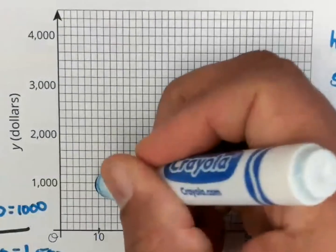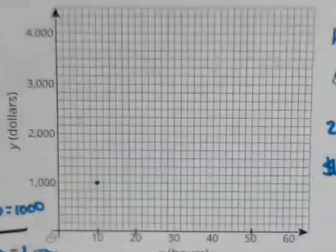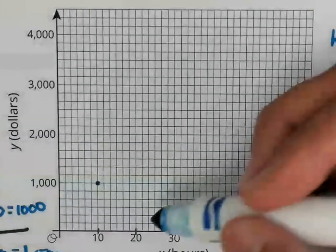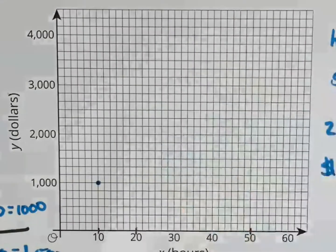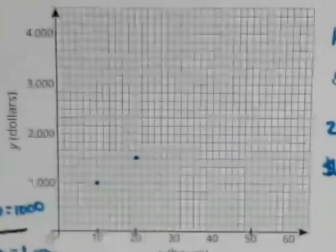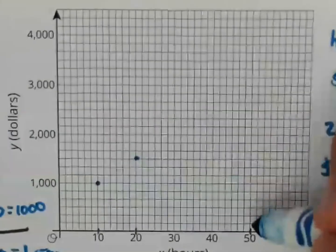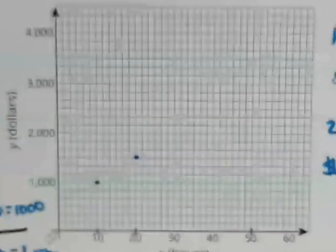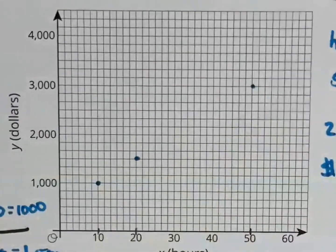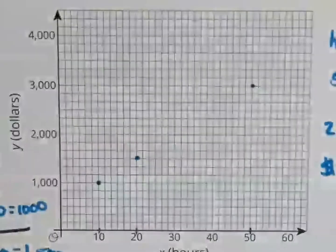So 10, 1,000, I'm going to put my point there. 20 is 1,500, and 50 is 3,000. Got my point there, and now you see all three of these points line up. Now I'm going to draw the line.